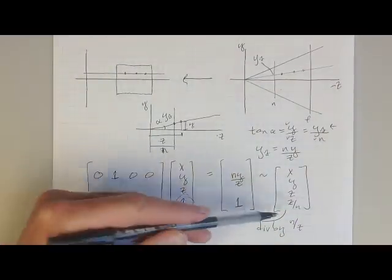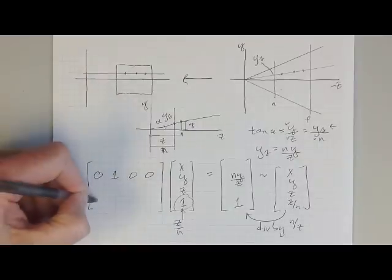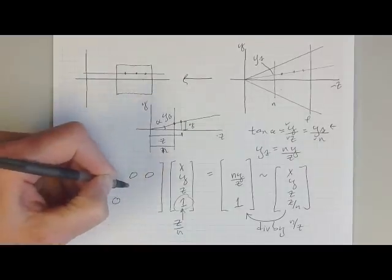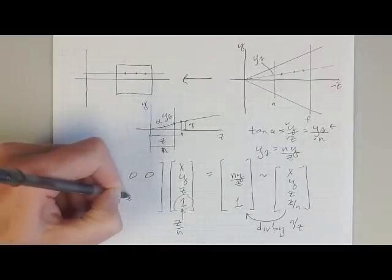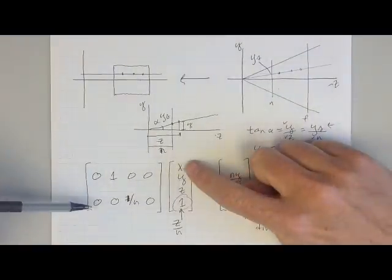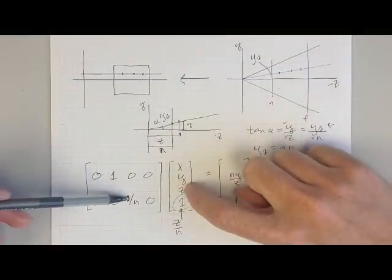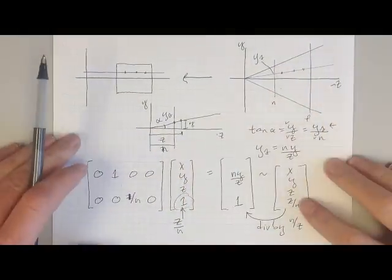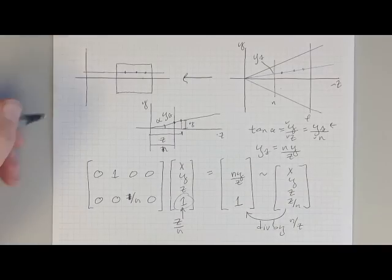The next thing I want is z over n in the fourth component of the result. So to get z over n there, I just multiply by 0, 0, 1 over n, and then 0. So what that gives me is 0 times x plus 0 times y plus z over n plus 0 times 1, which gives me a z over n in the fourth component of the matrix.